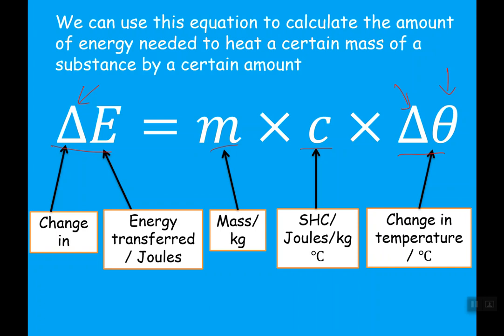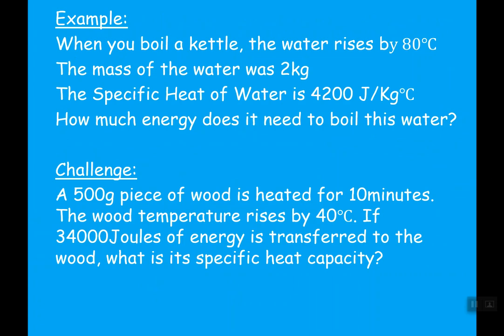Another thing - it's change because you don't know how much energy a substance has to start with. We're just saying how much energy is either transferred to it if you're heating it or transferred away if it's cooling. Energy is measured in joules. Mass is measured in kilograms. Specific capacity is joules per kilogram degree Celsius. Change in temperature is measured in degrees Celsius. This equation is given to you - you do not need to remember it.